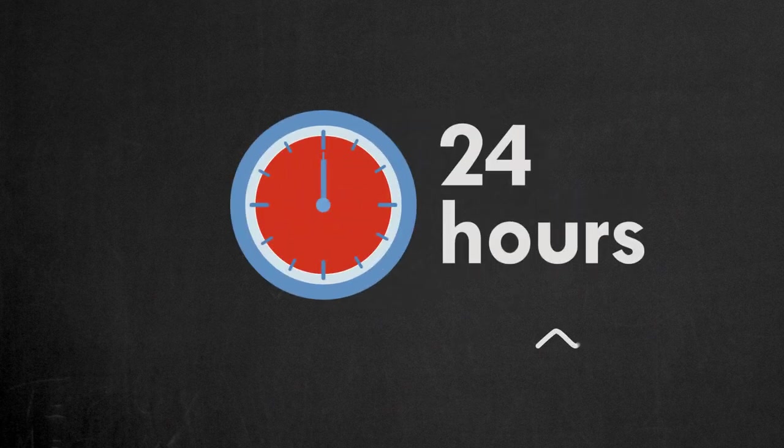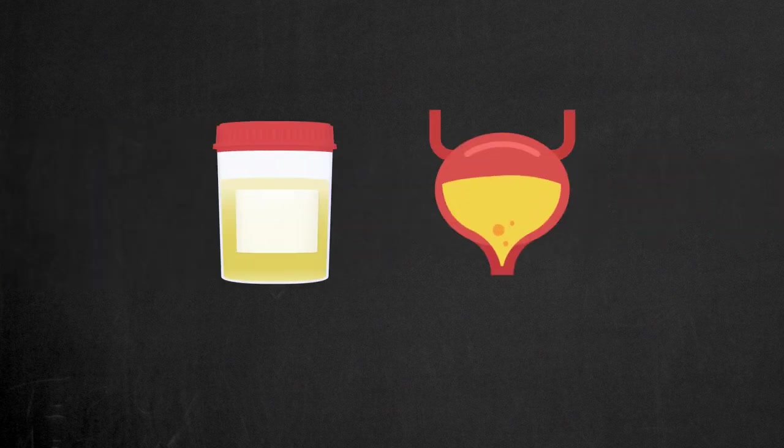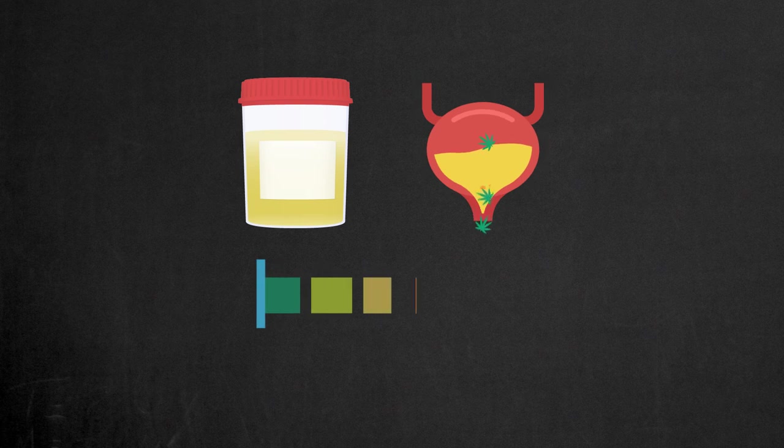There are two types of THC detox kits. The first type is the same-day detox kits. These kits temporarily flush the marijuana metabolites from the bladder, making the THC concentration in the urine below the detectable level.